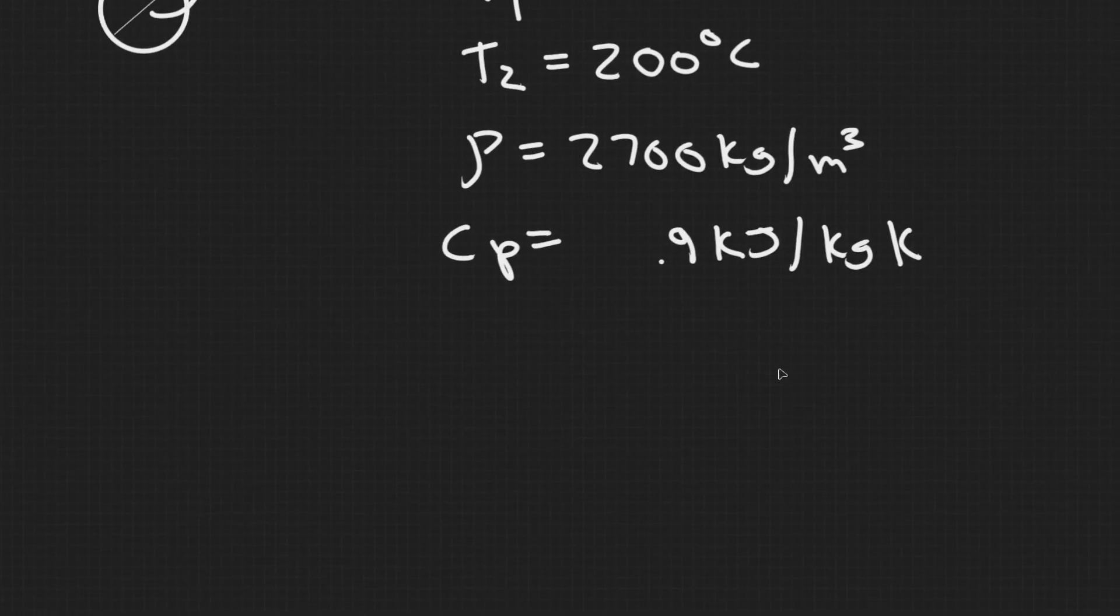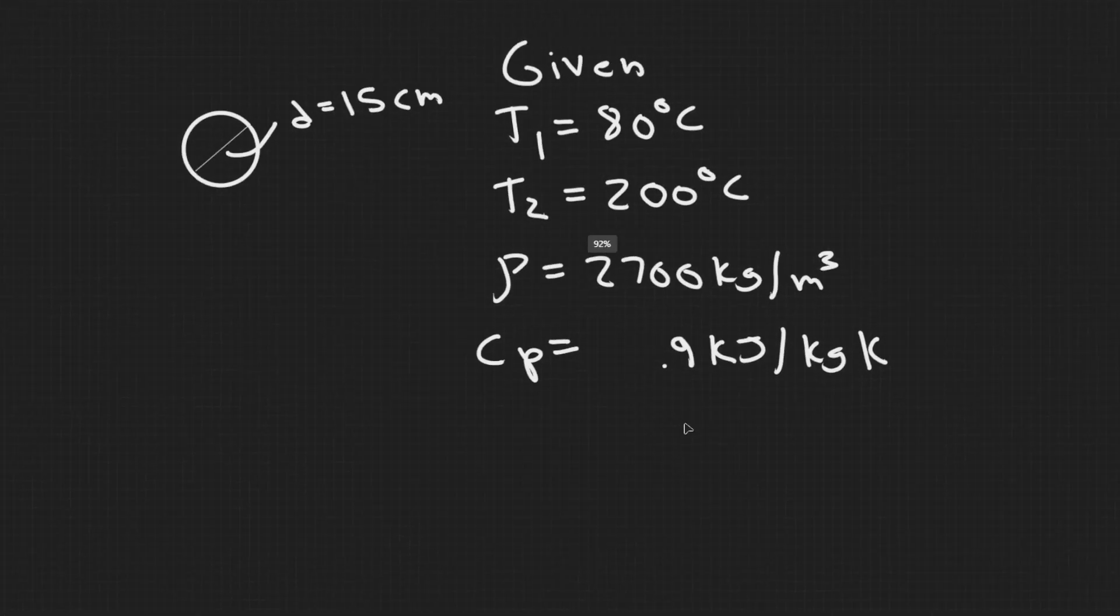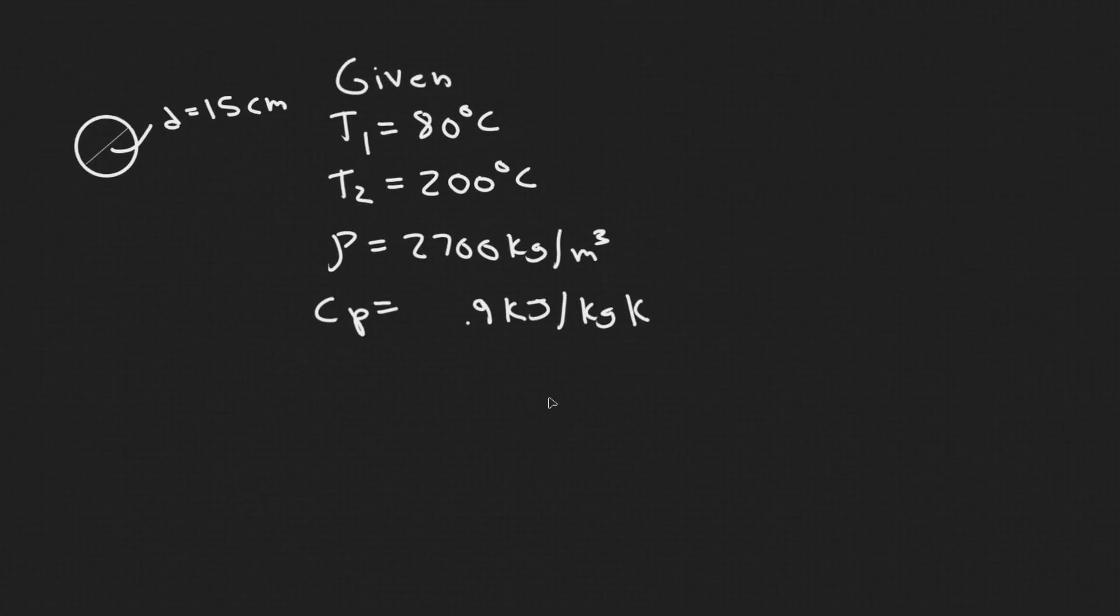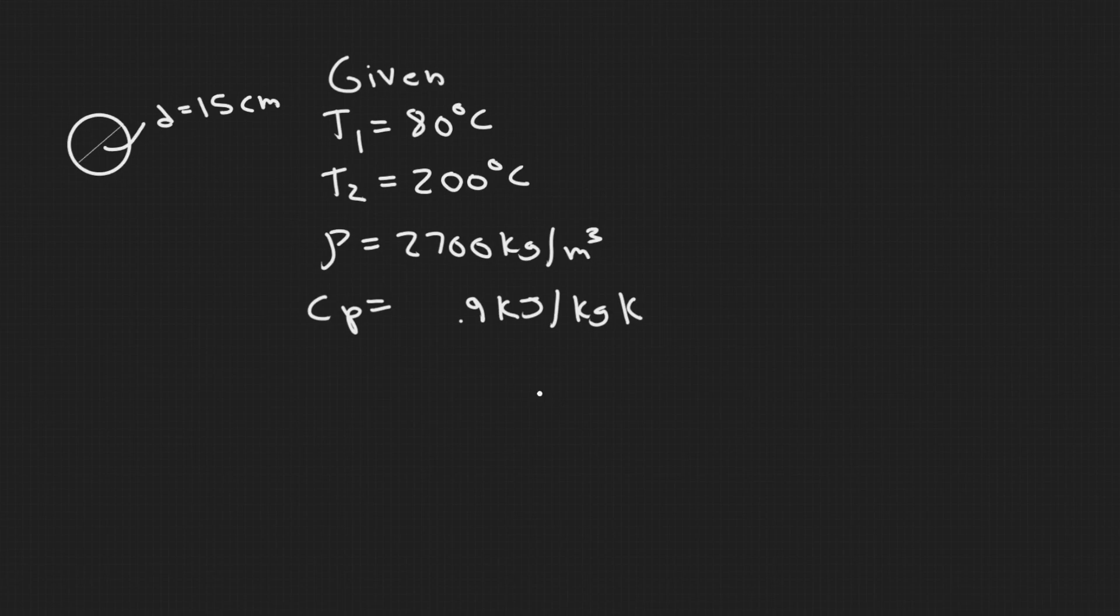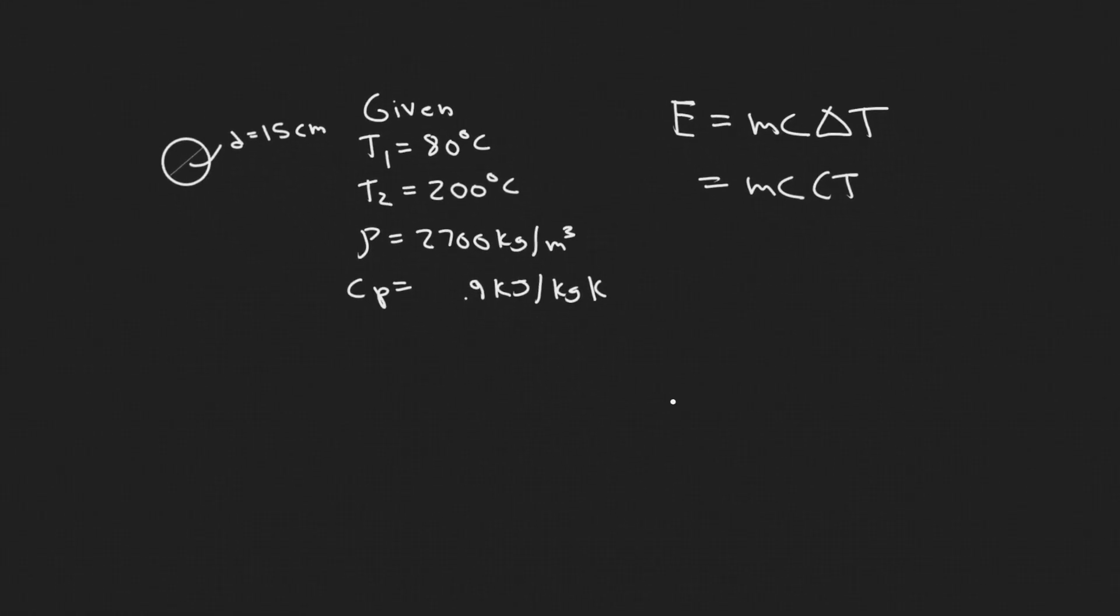And so what we're trying to find is energy. So they're basically telling us how much energy is it going to take to be able to heat this up. So there's one formula you basically need to know for this: the amount of energy it's going to take is equal to mcΔT. So if we know the mass of the thing that we're going to be heating up, we know its specific heat, and we know what the change in temperature is going to be, that's going to tell us how much energy it's going to require to be able to raise it that temperature. So if we rewrite this, the change in temperature is just the same thing as T2 minus T1, final minus initial.